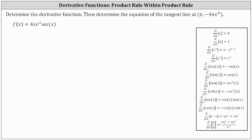Notice the function f of x is a product of three functions of x, and therefore we'll have to apply the product rule within the product rule. We'll let the first function be four x e to the x, and the second function be secant x. So we'll let u equal four x e to the x, and v equal secant x.